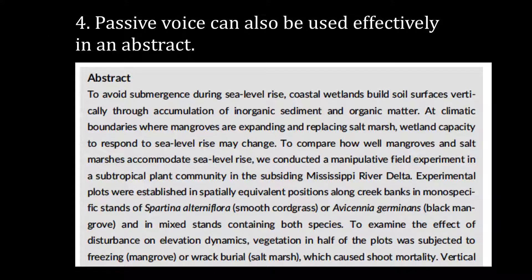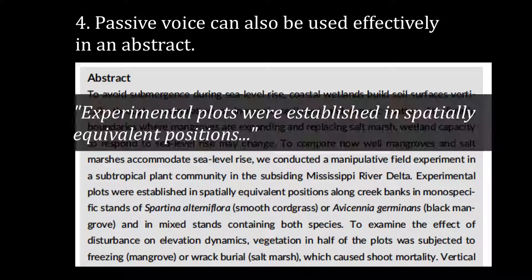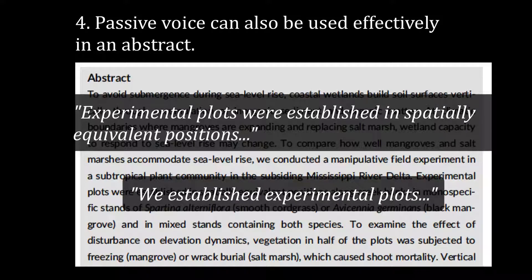Passive voice can also be used effectively in an abstract in combination with active constructions. Here, for example, is an excerpt from an abstract: 'Experimental plots were established in spatially equivalent positions.' Of course, you could also say 'We established experimental plots,' but first-person pronouns often put the emphasis on the researcher rather than on the research. Use such pronouns sparingly.